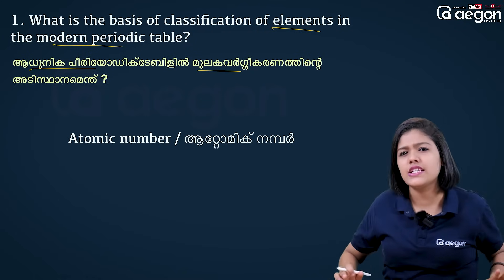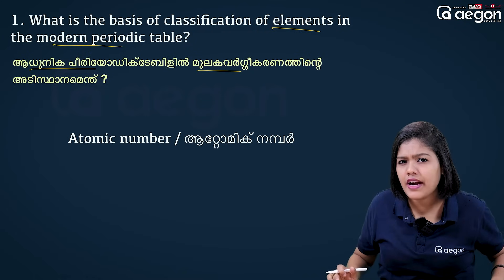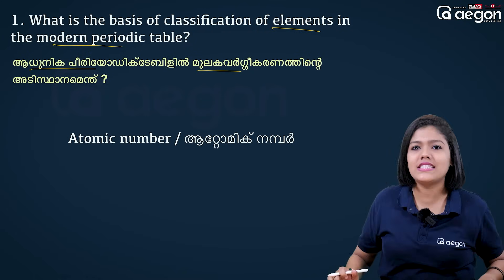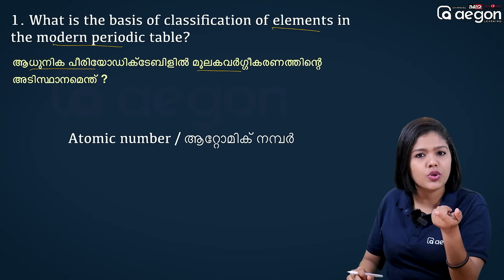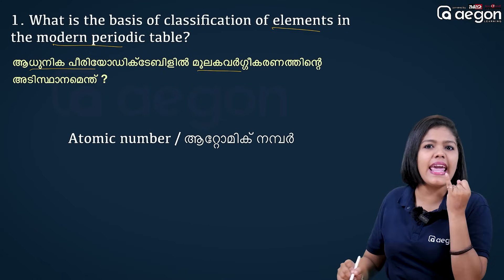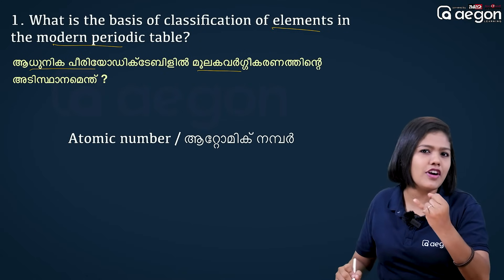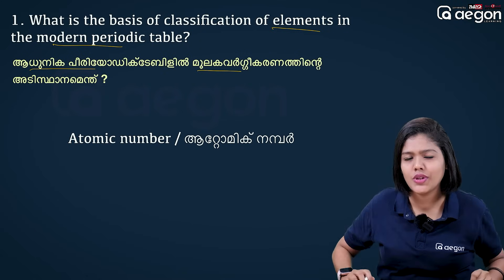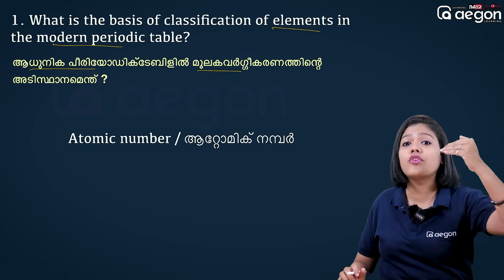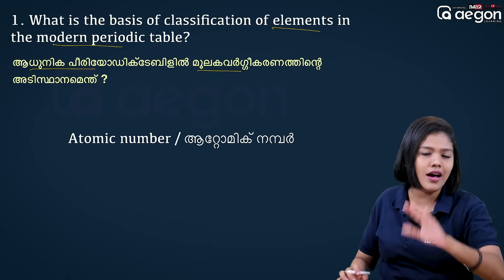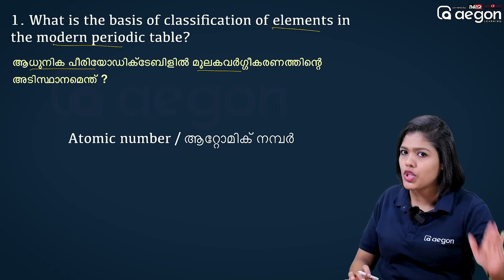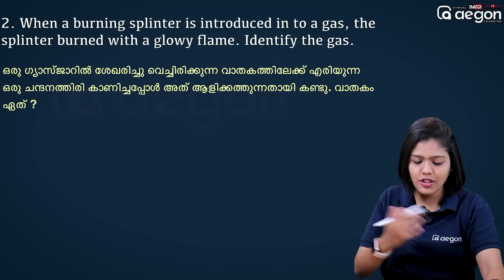In the modern periodic table, how do you see the atomic number? The elements are arranged in increasing order of atomic number, not atomic mass. This is very important.